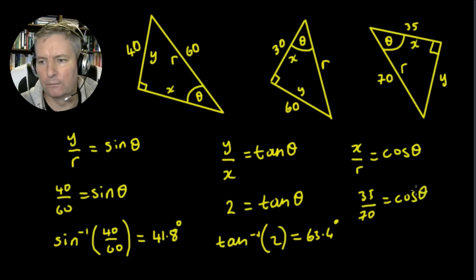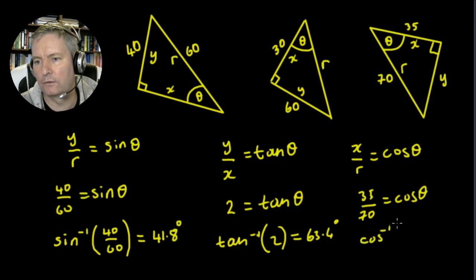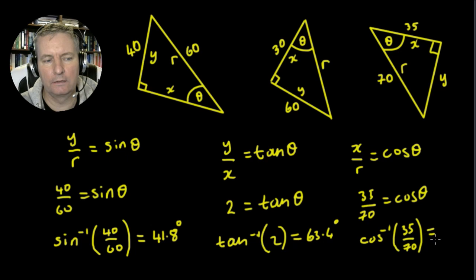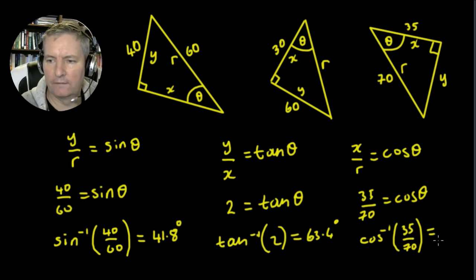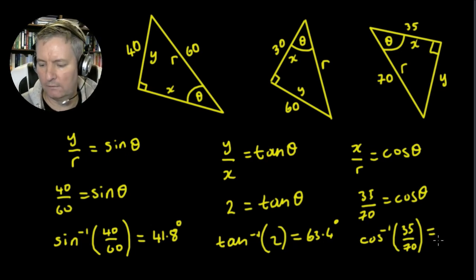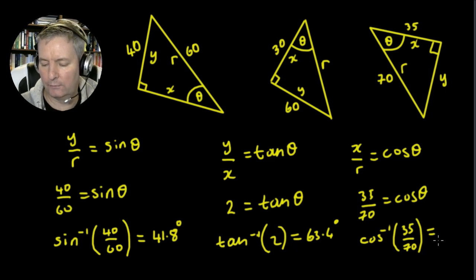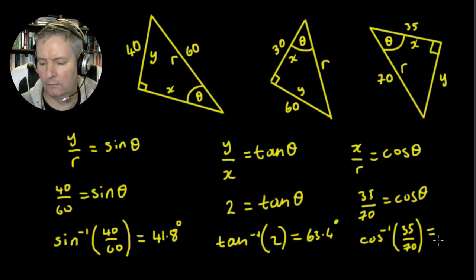In order to get the angle theta, we write down the inverse cos of 35 upon 70. I'll put that in my calculator — 35 upon 70 is just a half. So shift cos, open the brackets, enter 35 divided by 70, close the brackets, and I get 60 degrees.